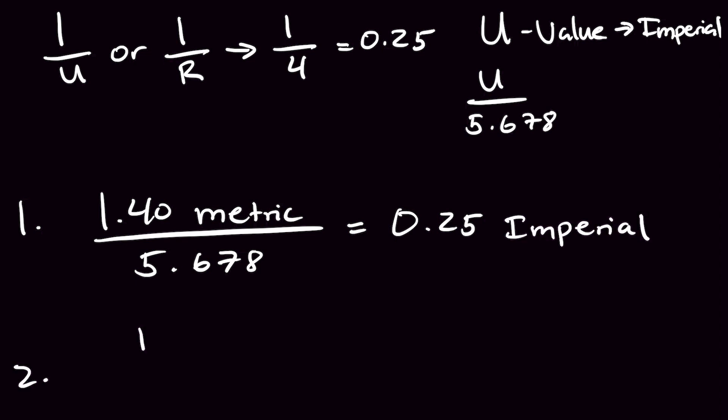Next, we take the number 1, divide that by the value we just calculated, 0.25 imperial, which results in a 4 R value.